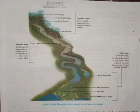A river, as one of the important natural agents, has three types of works. These are erosion, transportation, and deposition. We can divide these three works into three stages, and the river course is divided into three stages: upper course, middle course, and lower course.